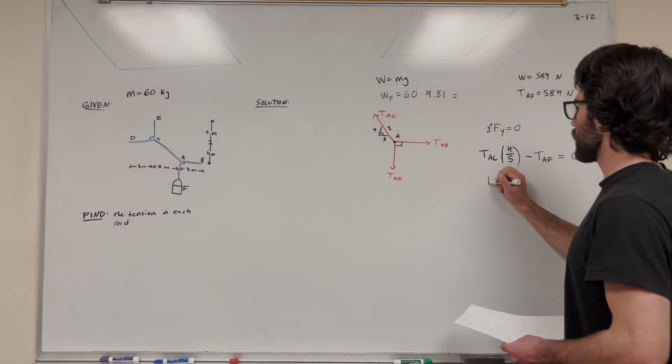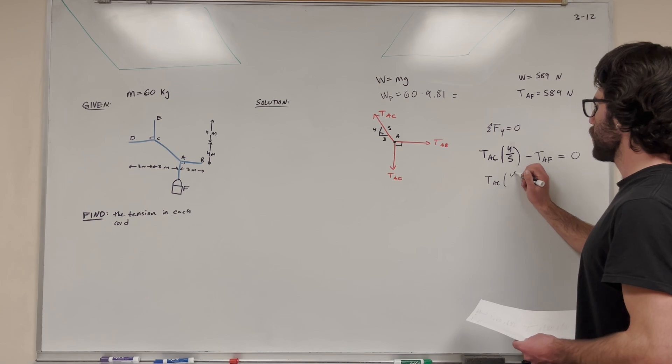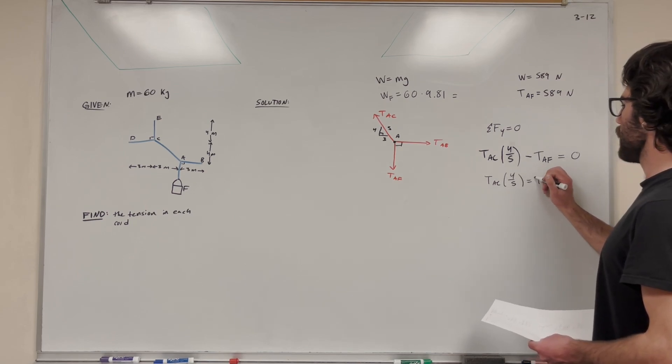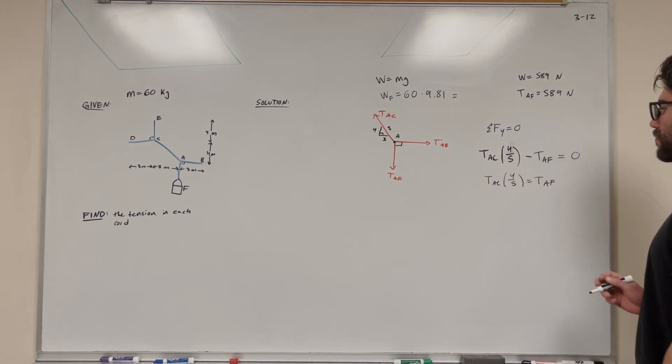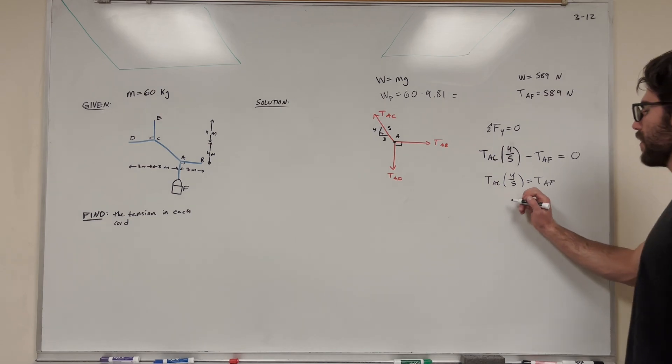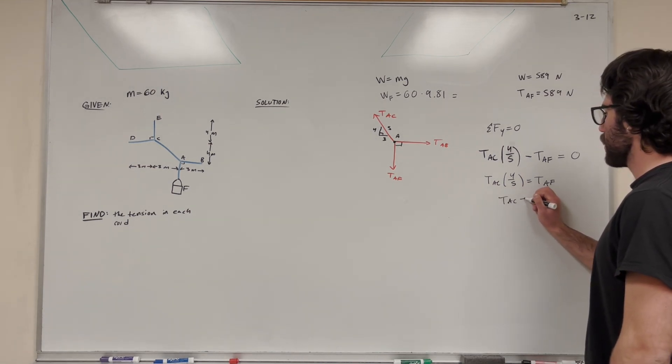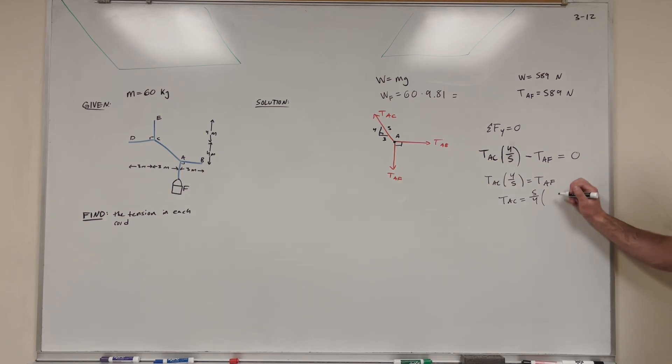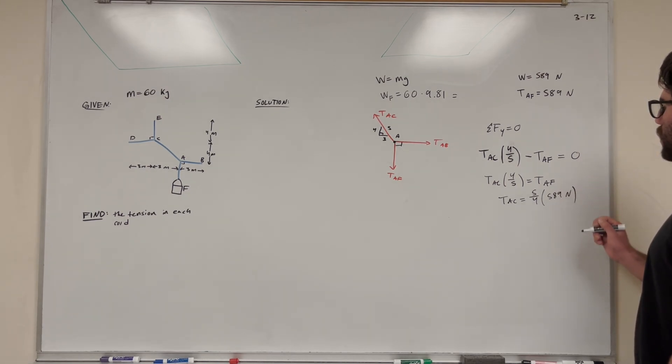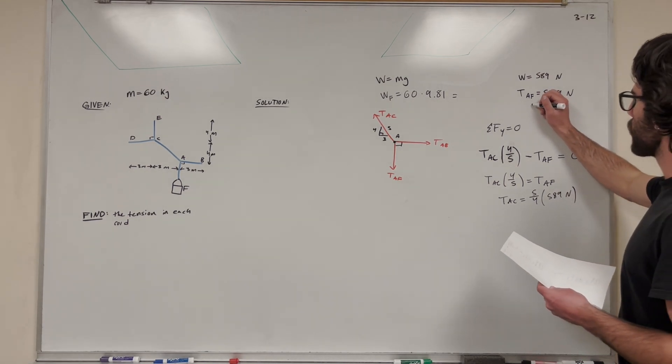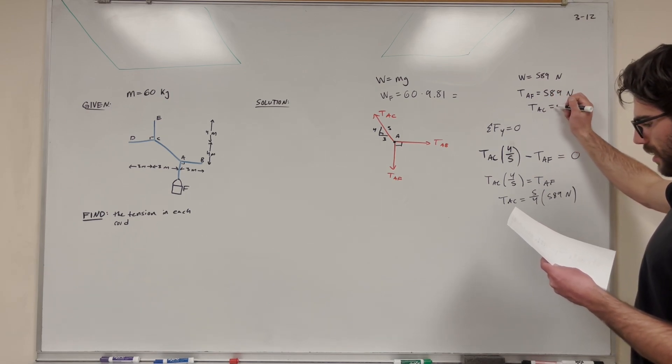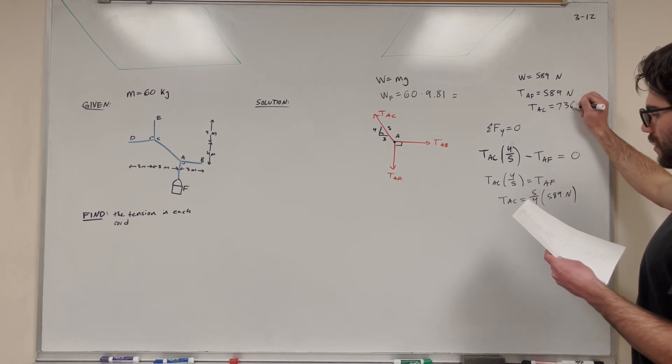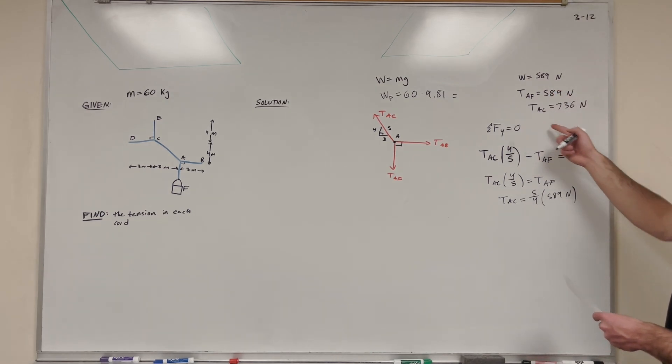So we're solving for tension AC. We're going to move tension AF to the other side to get tension AC times 4 fifths is equal to tension AF. Then we can divide by that 4 fifths. Get tension AC is equal to 5 fourths times tension AF, which is 589 newtons. And then we can solve that. So tension AC is equal to 736 newtons.